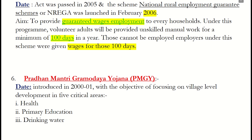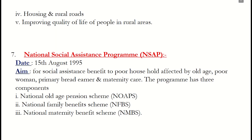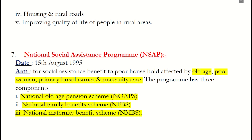In case such employment is not provided within 15 days of registration, applicants are provided an unemployment allowance. Sixth, Pradhan Mantri Gramodaya Yojana, launched in 2000-2001, with the main objective of focusing on village-level development including health, sanitation, and water facilities. Seventh, National Social Assistance Program, launched on 15th August 1995. Under this program, elderly people who have no one to take care of them are given pensions under the National Old Age Pension Scheme. Poor women, widows, and poor people are covered under the National Maternity Benefit Scheme and National Family Benefit Scheme.